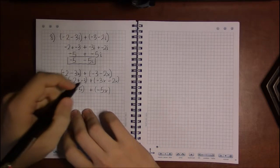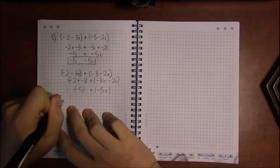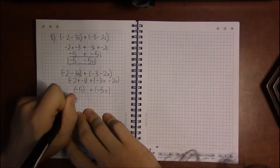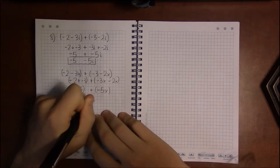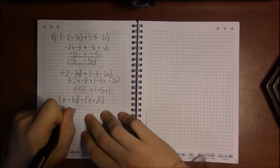But if you prefer formulas, then the formula is that when you have a complex number a plus bi and you add it to another complex number c plus di, your result...